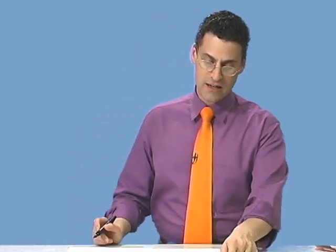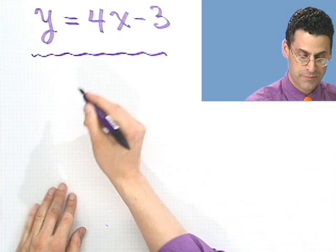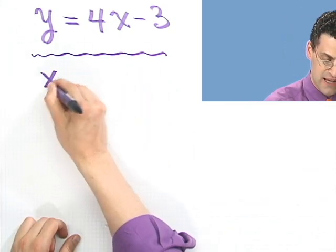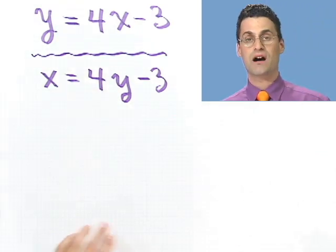So for example, what I do here is I flip the roles of x and y. So notice, this is not going to be the same equation. I'm going to change the equation, but I just flip roles. So now I see x equals 4y minus 3, and now I just solve for y.